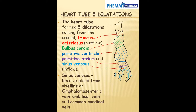The heart tube forms 5 dilatations. As development of the heart is progressing, the heart tube forms 5 dilatations, from the cranial to the caudal aspect. From the cranial aspect, we have our truncus arteriosus, which is going to form the outflow. We have our bulbus cordis, the primitive ventricle, primitive atrium, and the sinus venosus, which is going to form the inflow.